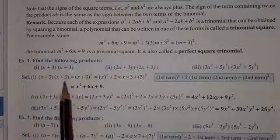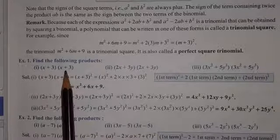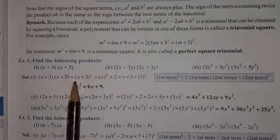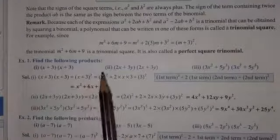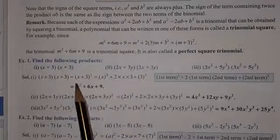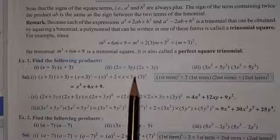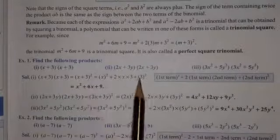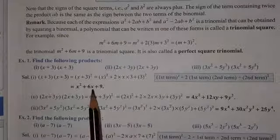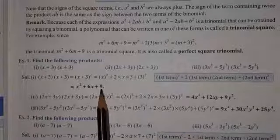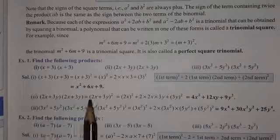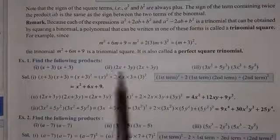x plus 3 into x plus 3 — हम चाहें तो binomials का multiplication rule apply कर सकते हैं, otherwise identity rule apply कर सकते हैं। Same terms हैं, so we can make it x plus 3 whole square. That means we will do the square of the first term — that is x square — plus double the product of both the terms — that is 2 into x into 3, which gives 6x — plus square of the second term — 3 square, which gives 9. So the answer is x square plus 6x plus 9. The rule is: first term square, plus 2 into first term into second term, plus second term square.